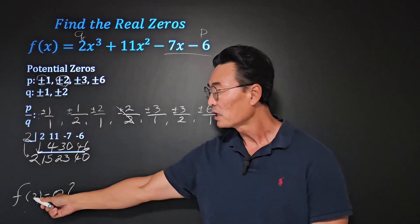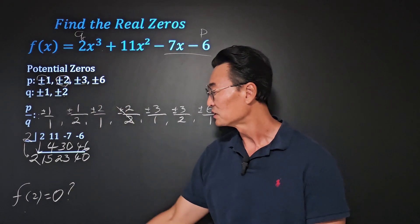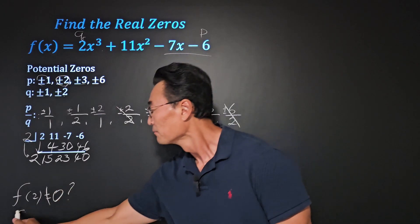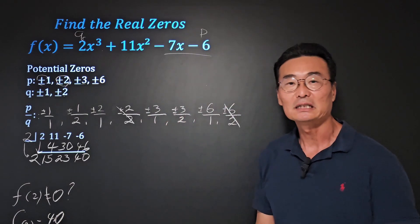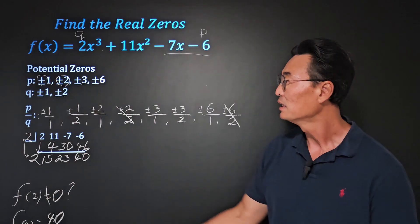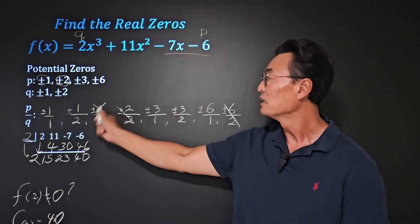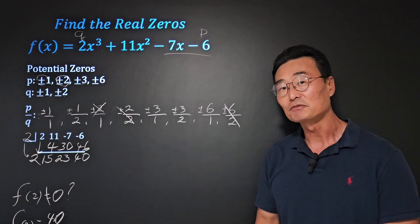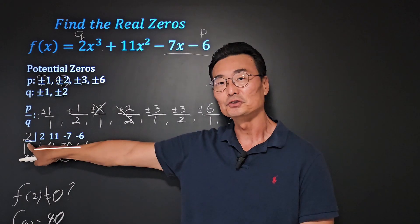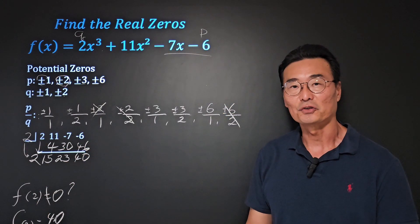Meaning when we plug in a 2 into the function, we don't get a 0. Instead, f of 2 will actually equal 40. What does that mean? That 2 that we have here is not going to be one of the zeros. It may be negative 2, but we know for sure the positive 2 is not one of the real zeros.